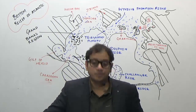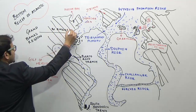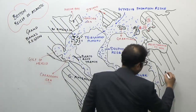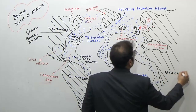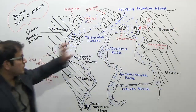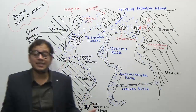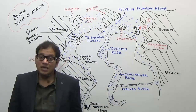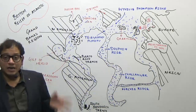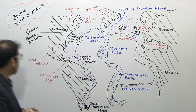What is the shape of the Atlantic Ocean? As shown in this diagram, this part is North America, this part is South America, and this part is Africa. The European part is also marked. The Atlantic Ocean is S-shaped.